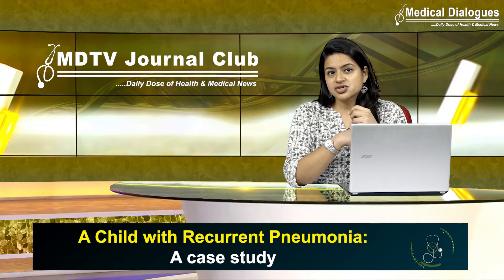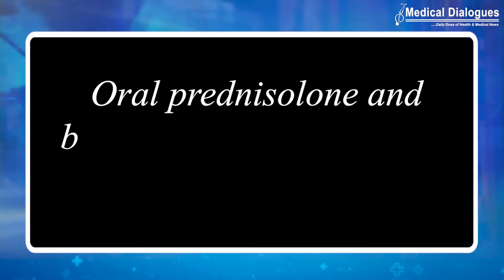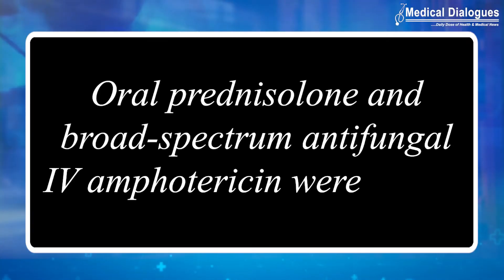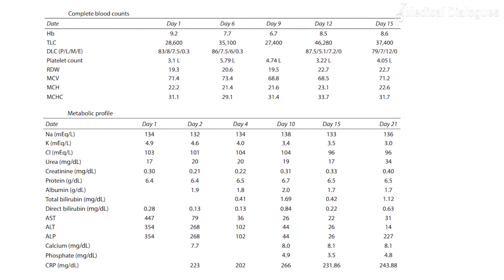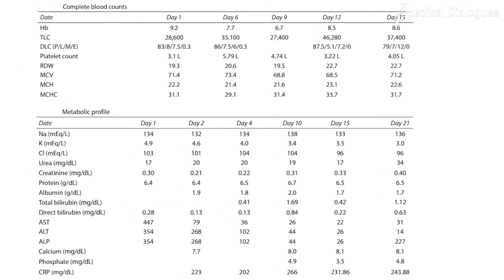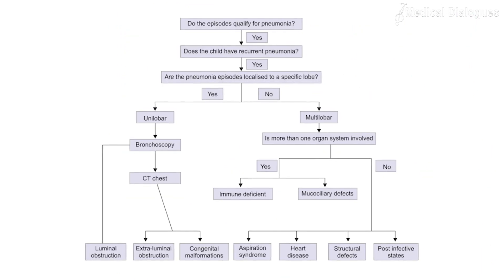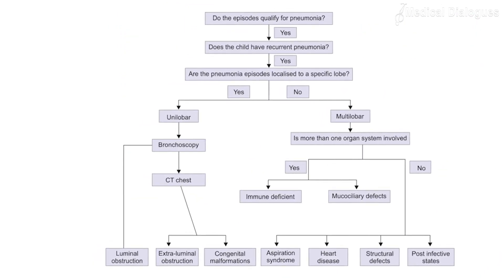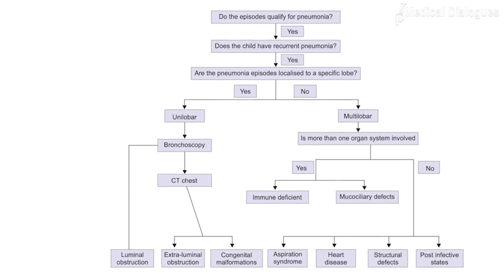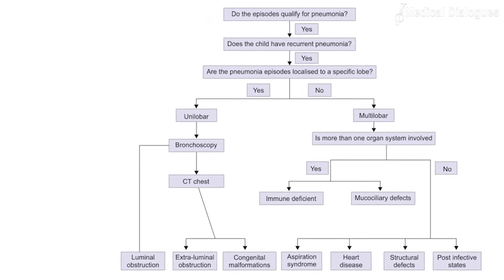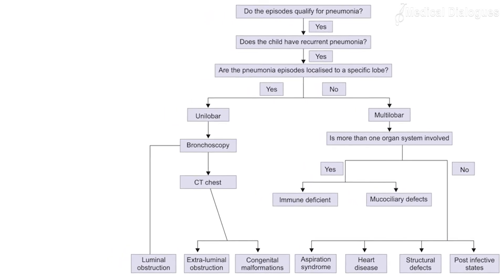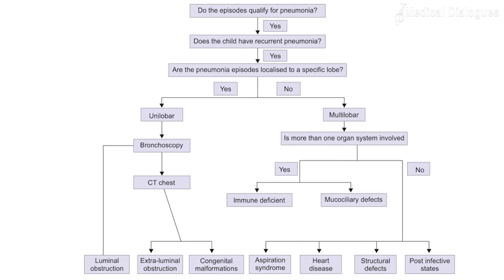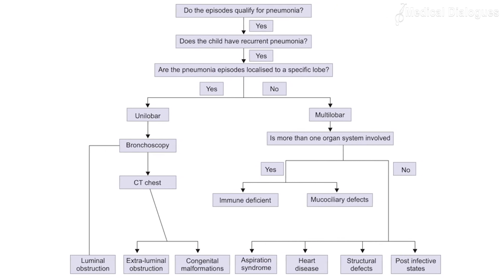Oral prednisolone and broad-spectrum antifungal IV amphotericin were added to the regimen. On day 17 of hospitalization, her sensorium deteriorated suddenly. The researchers concluded that a stepwise clinical approach confirmed the diagnosis of underlying chronic granulomatous disease with bronchiectasis, with disseminated tuberculosis involving both the lungs and the central nervous system, complicated by allergic bronchopulmonary aspergillosis.